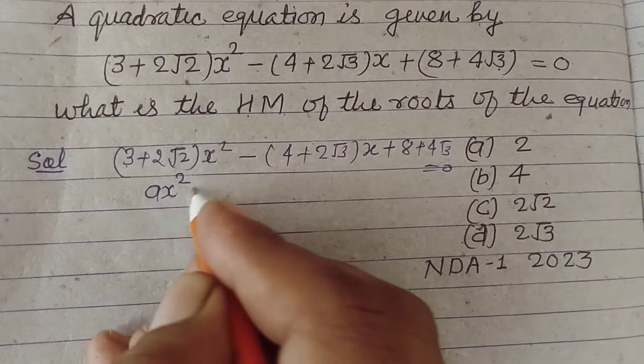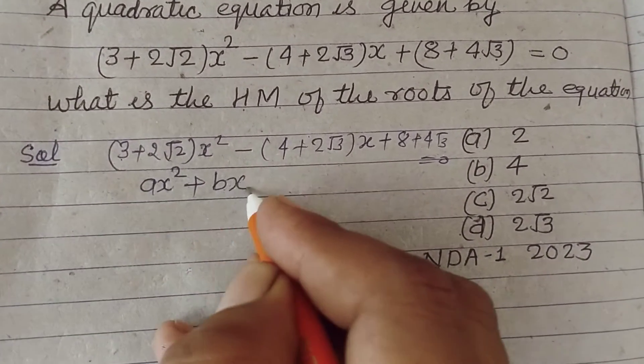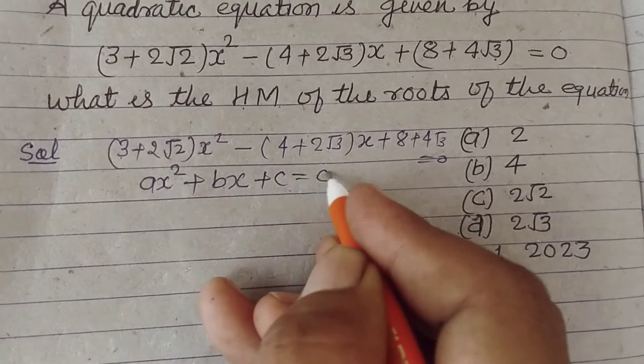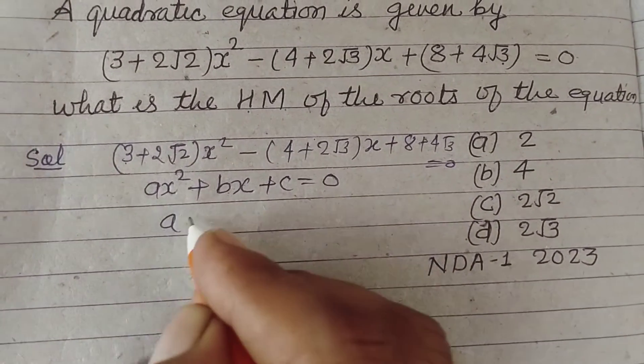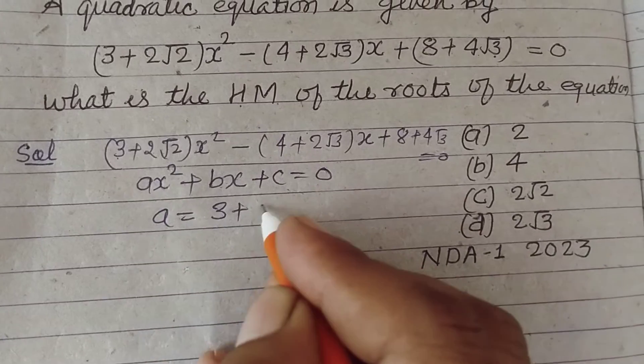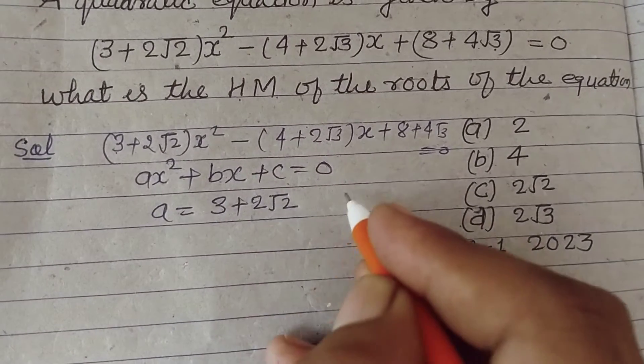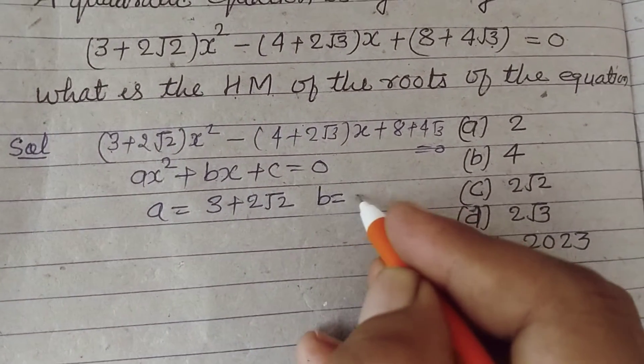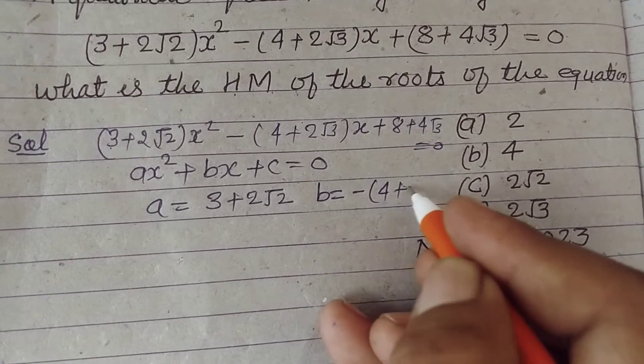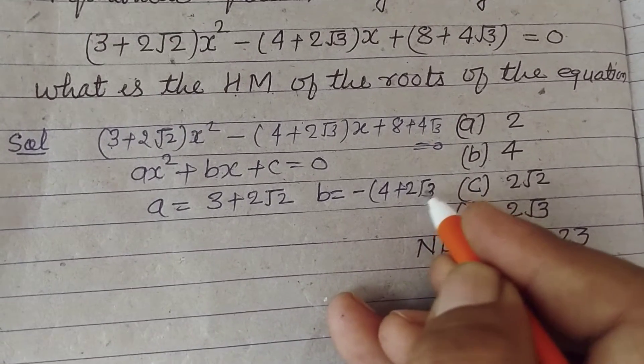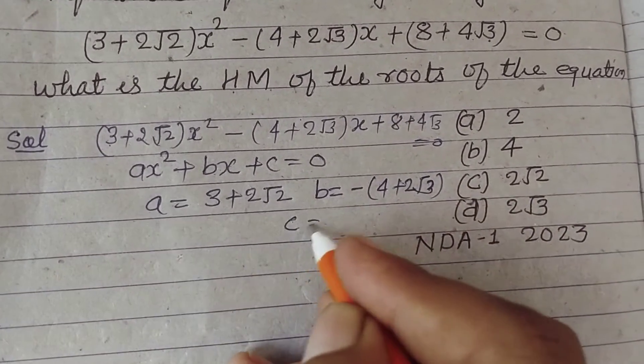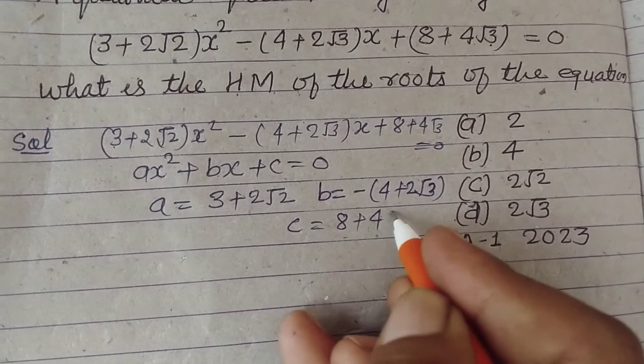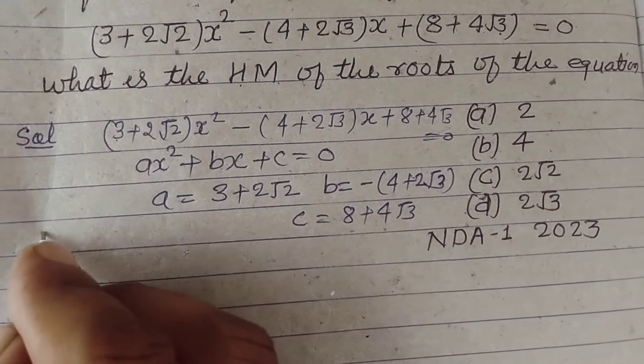Comparing this with the standard form ax² + bx + c = 0 of a quadratic equation, here a is 3 + 2√2, b is -(4 + 2√3), and c is 8 + 4√3.